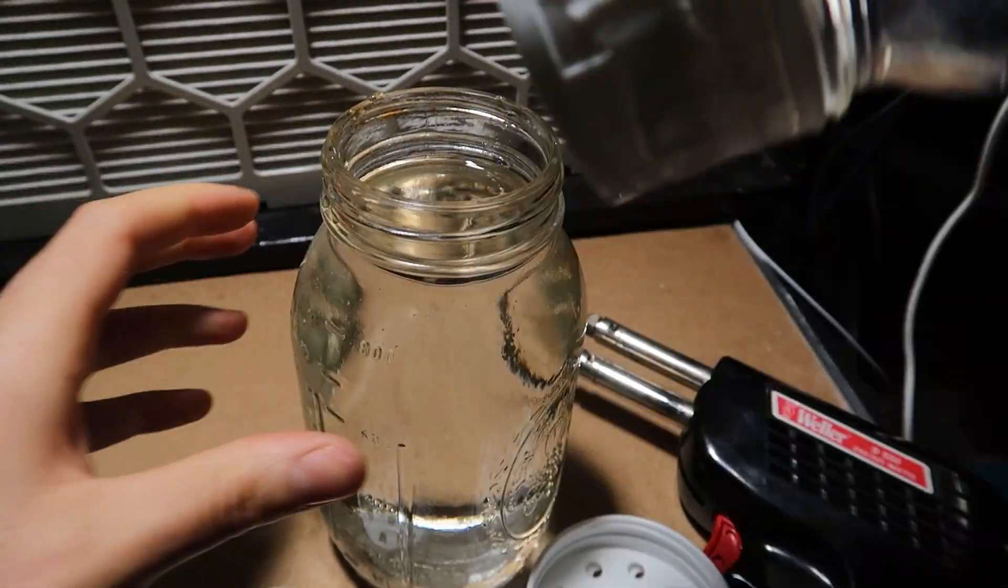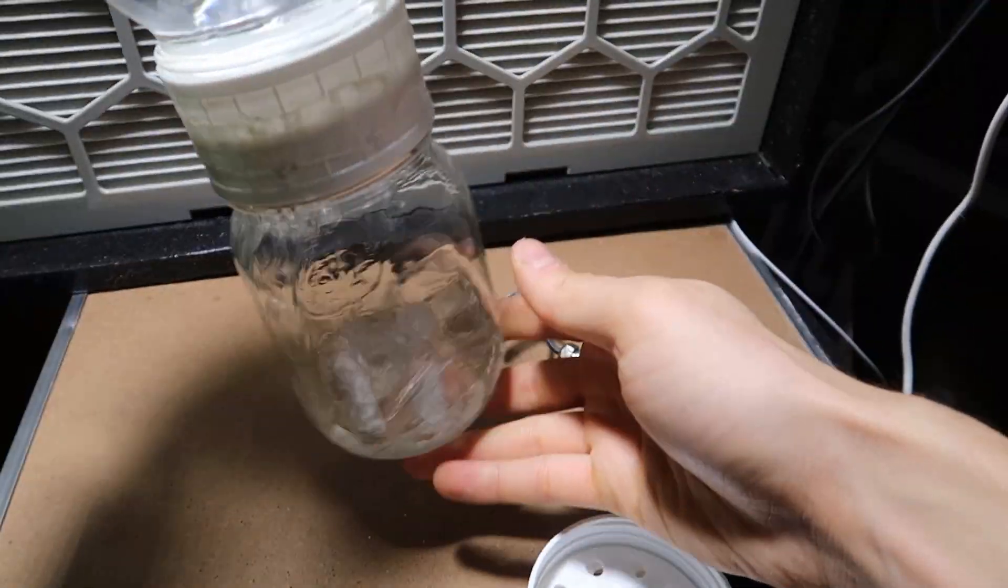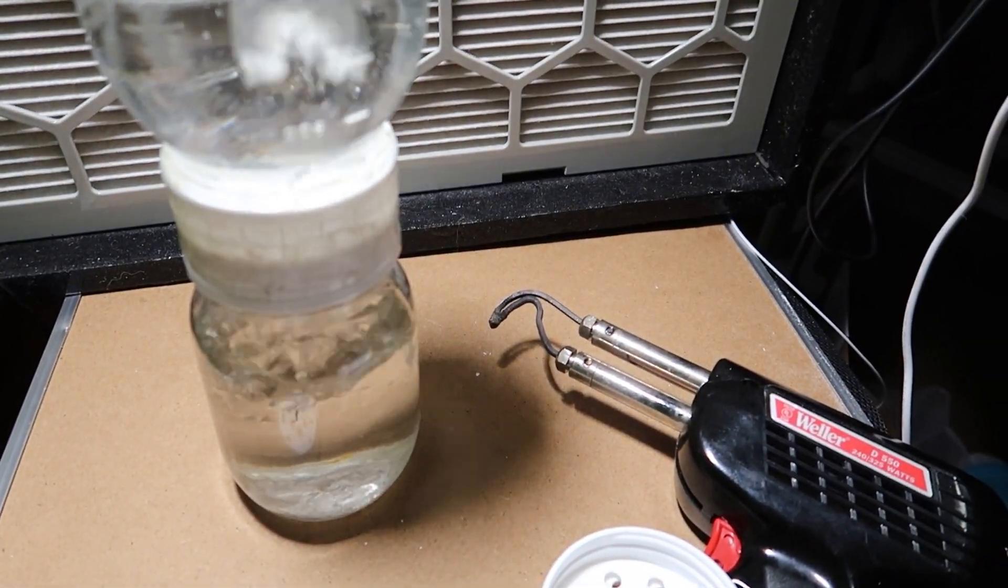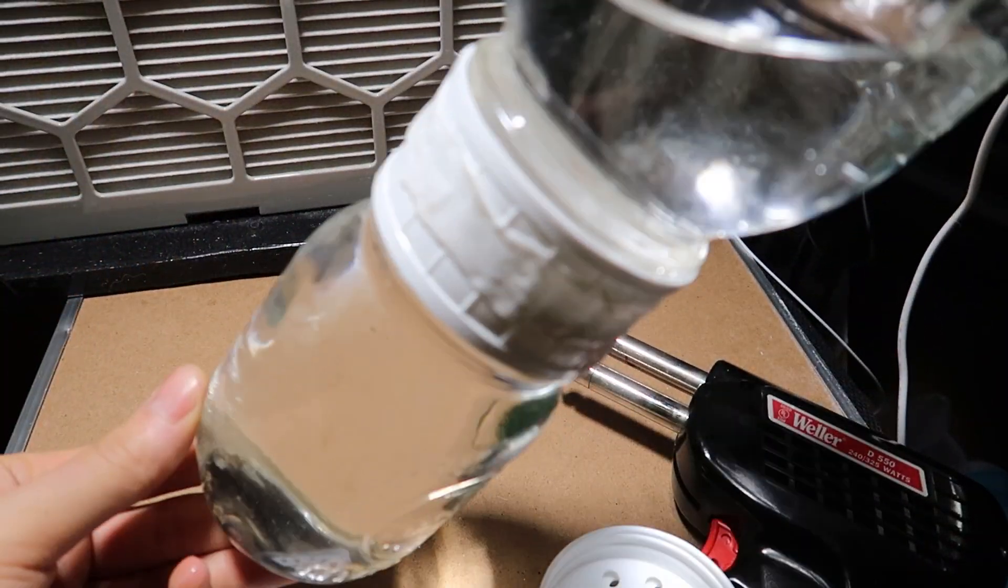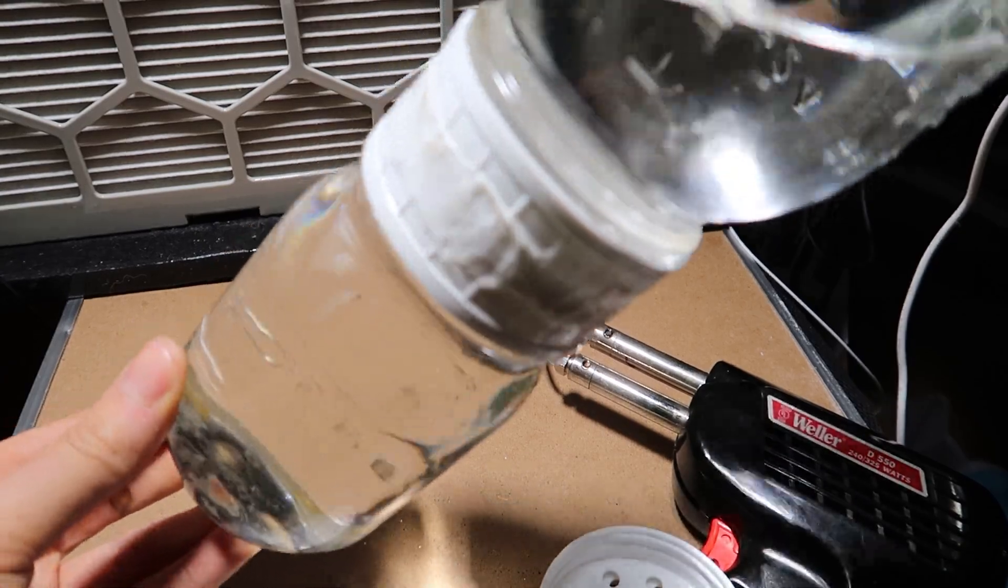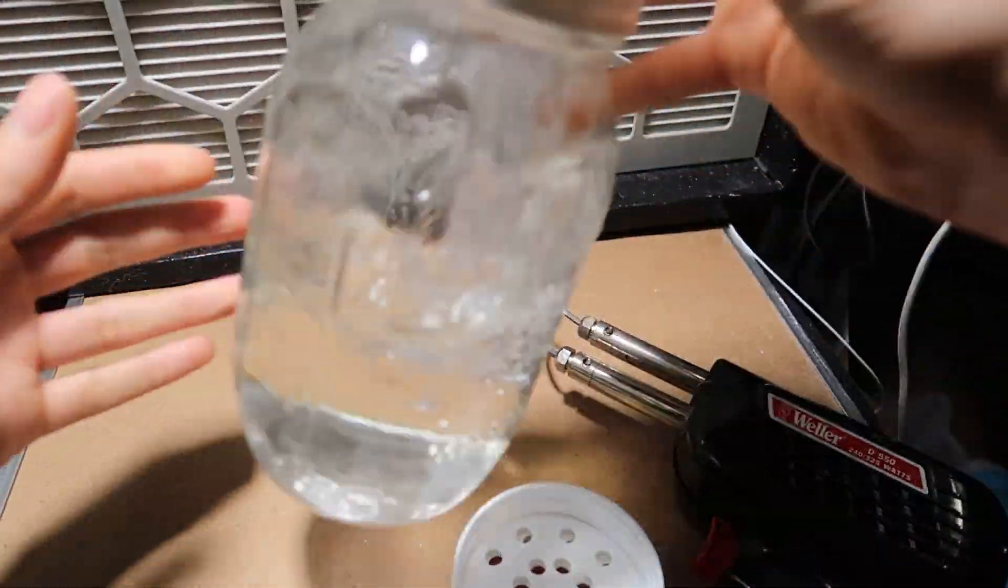So now we're going to leak test it. I grab a larger mason jar, fill it up with water and then tilt it onto the smaller jar. This way it fills it up and then even flows beyond the top of it. Make sure there's no leaks and this looks great.